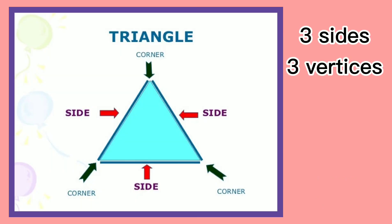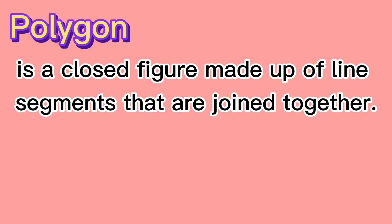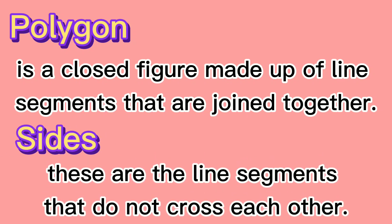The three angles of the triangle always add up to 180 degrees. A polygon is a closed figure made up of several line segments that are joined together. The line segments are called sides and do not cross each other. There are exactly two sides that meet at a point.